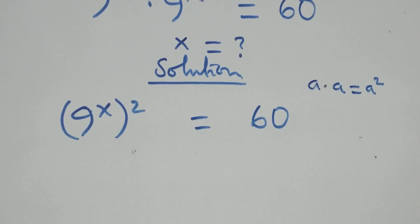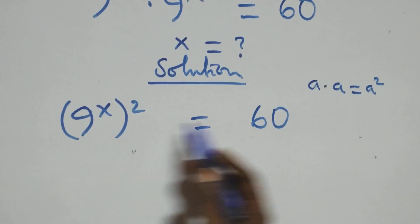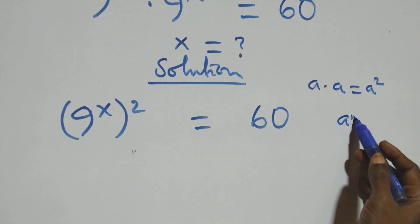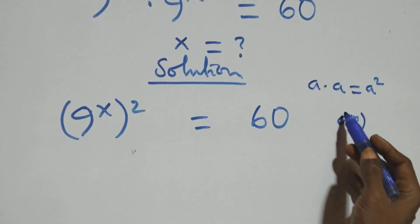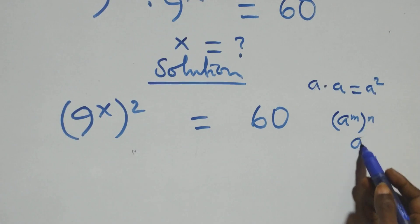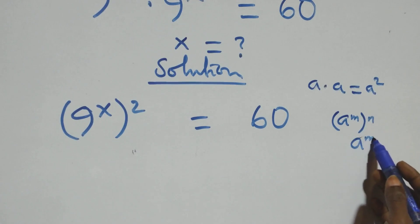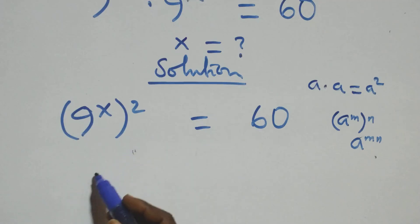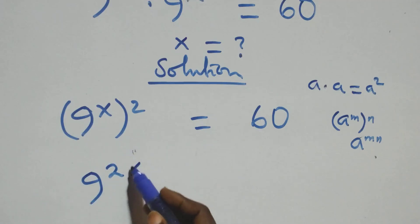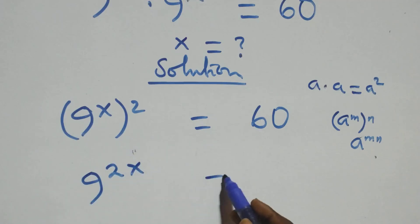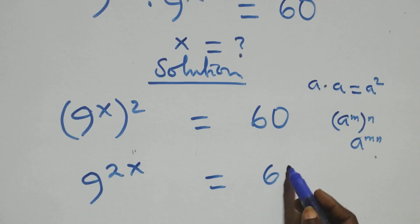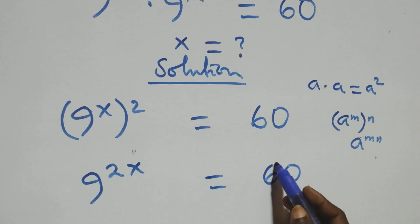This also follows when we have a raised to power m times a raised to power m — it is the same thing as a raised to power m plus m. So the power multiplies and we have 9 raised to power 2x equals to 60 on this side.